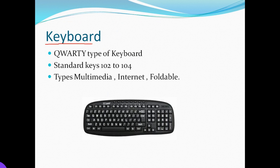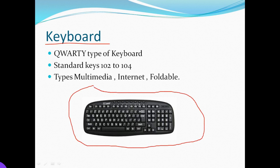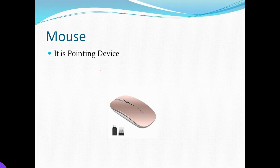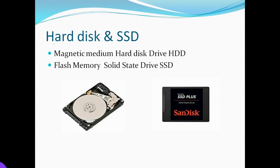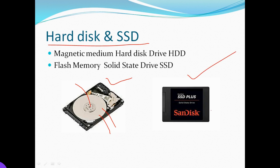What is a keyboard? You can explain the keyboard. What is a pointing device? This is one of the wireless pointing devices. You can handle the hard disk or SSD — it has a spindle motor, and there is also the SATA SSD.